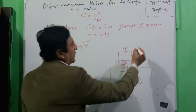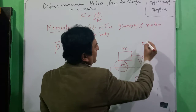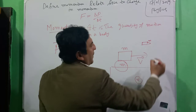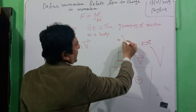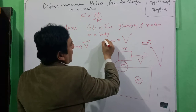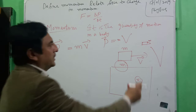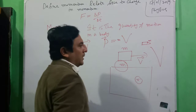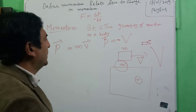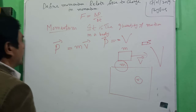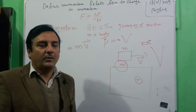Another example is a bullet fired from a gun. Here the mass is very small, but the speed is very large. So the product of mass and velocity will be greater. If this bullet hits a board, it will penetrate it because the momentum of the bullet is very large. So momentum is the product of mass and velocity.